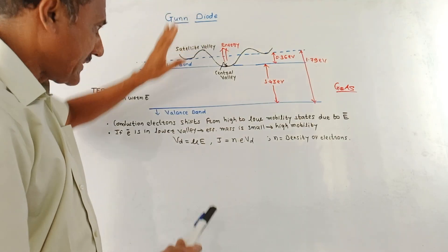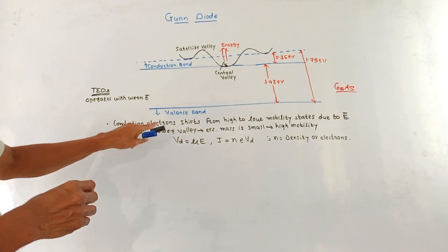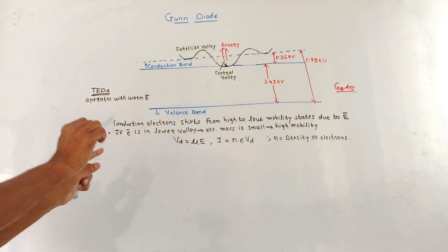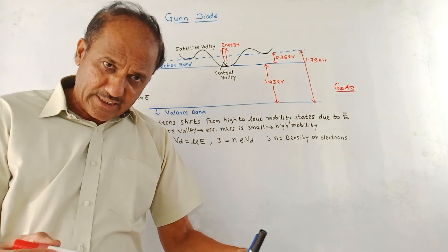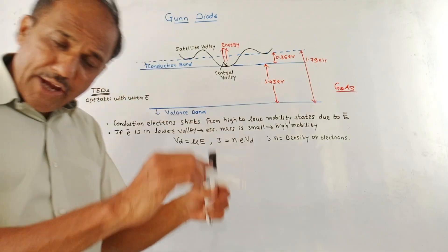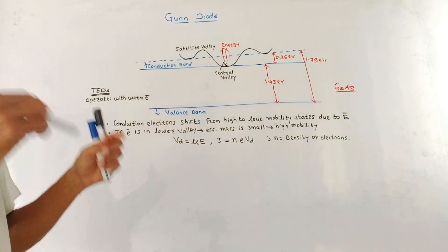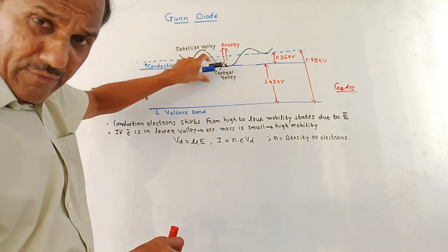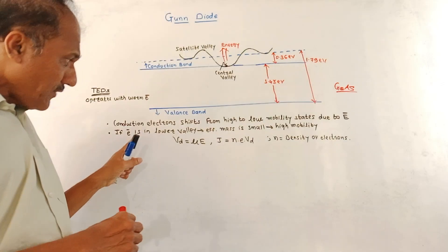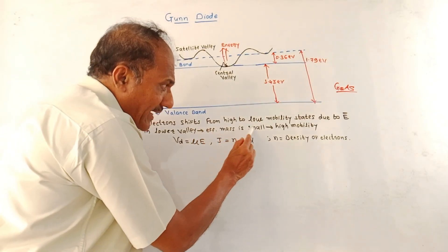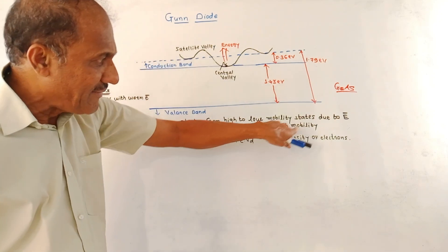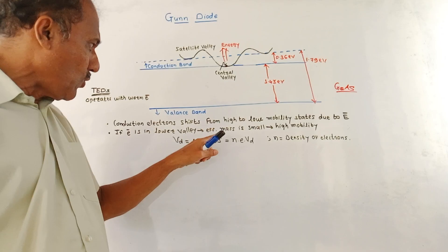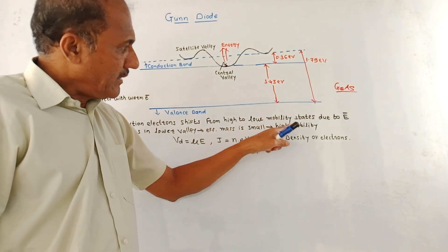Conduction electrons shift from high to low mobility states whenever an electric field is applied. Remember this: whenever electrons are conducting, they can shift from high to low mobility states due to the applied electric field. If an electron is in the lower valley — the Central Valley — its effective mass is small but it has high mobility. If the electron is in the upper valley — the Satellite Valley — its effective mass is large and it has low mobility.